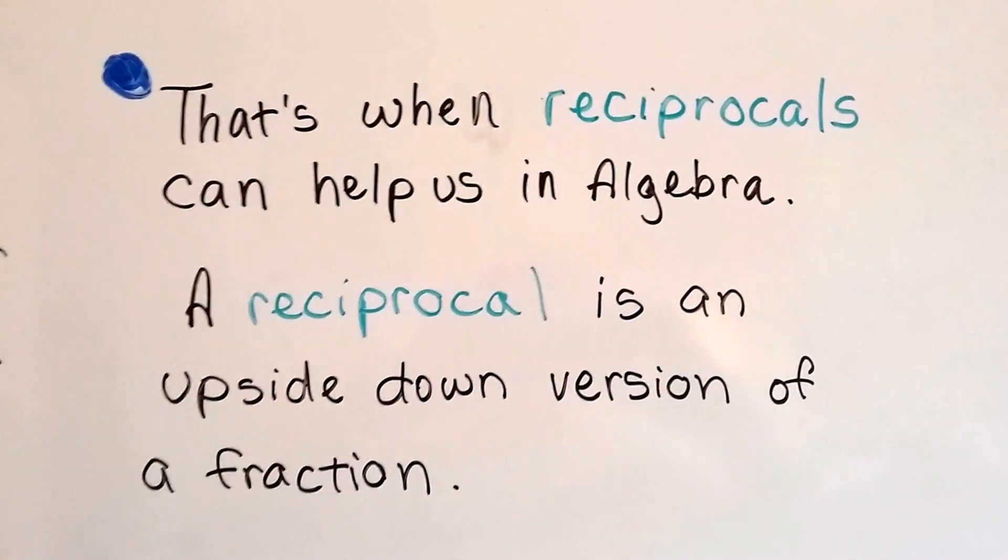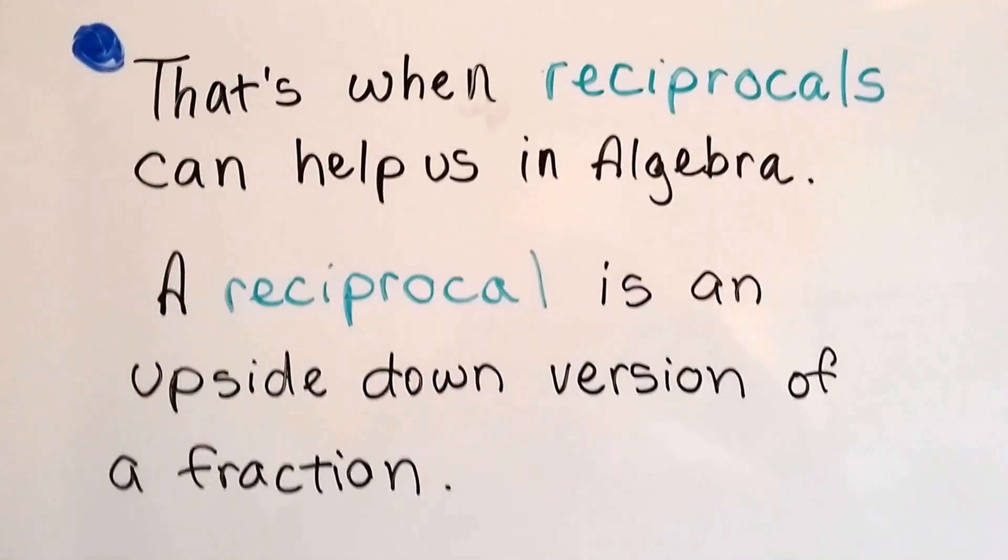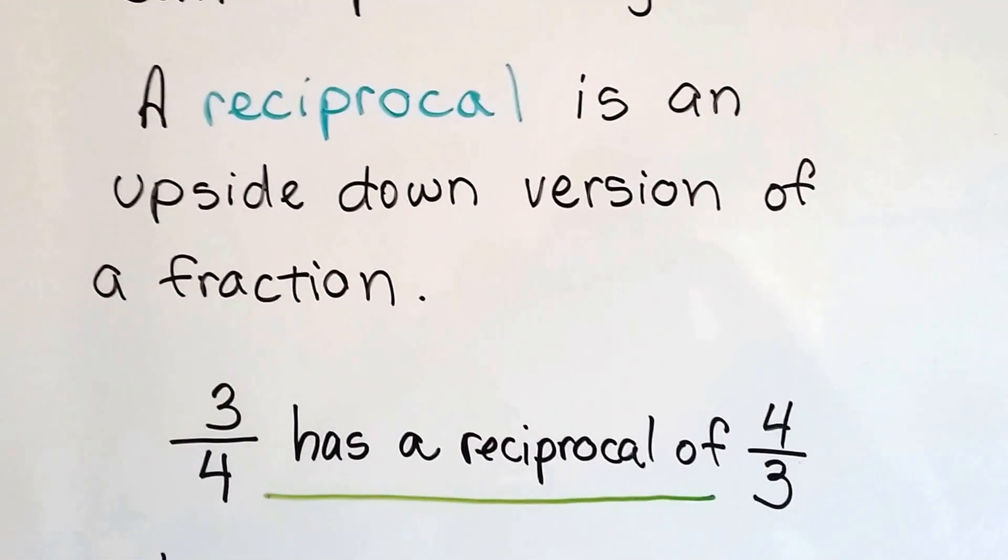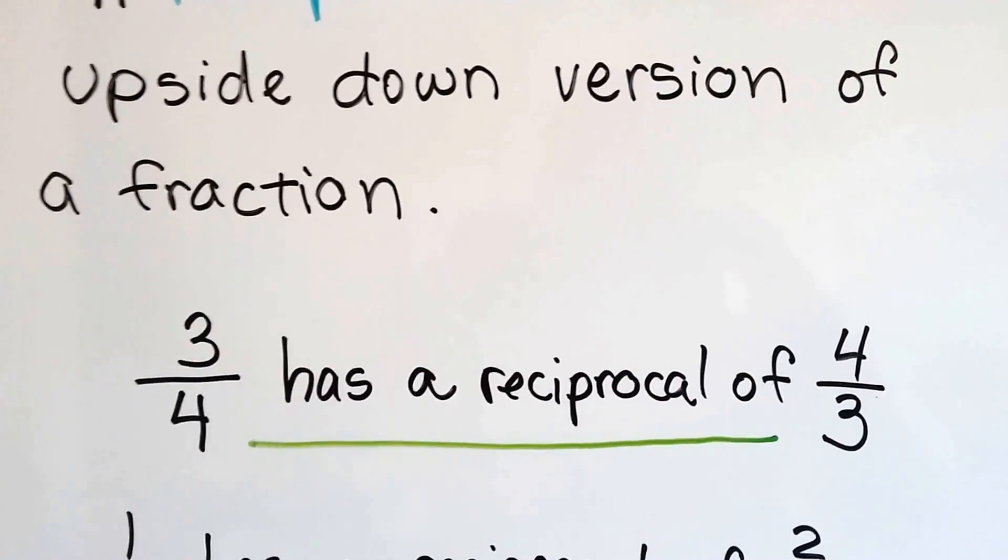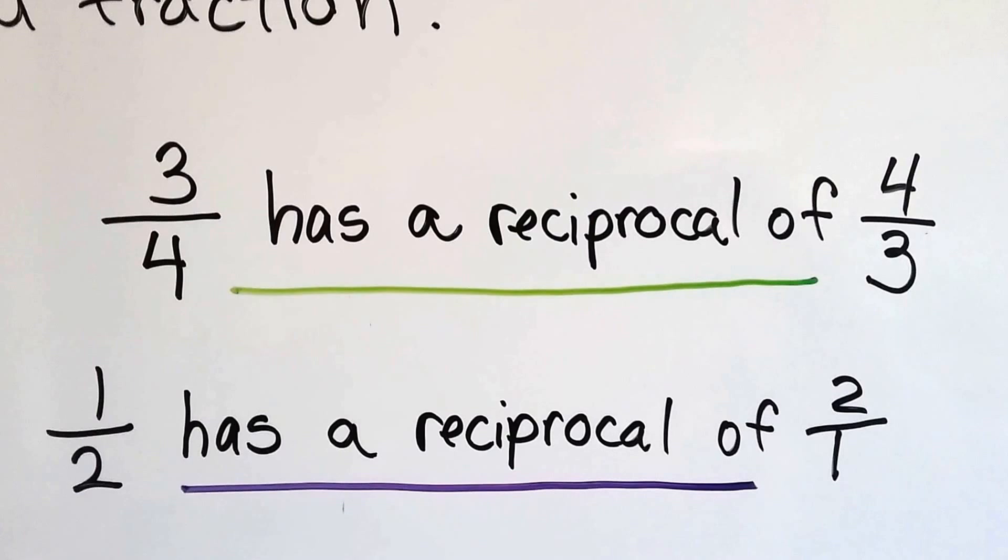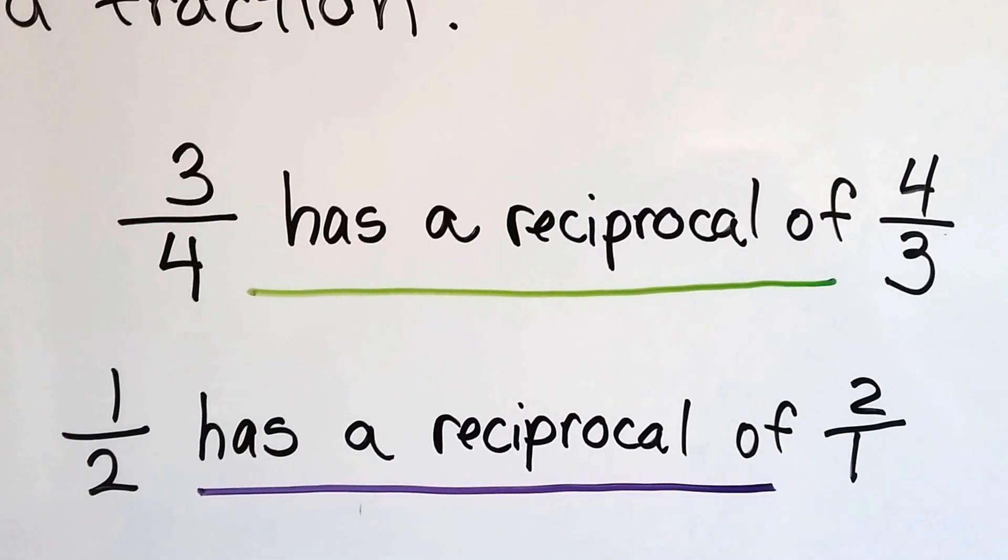Well, that's when a reciprocal can help us in algebra. A reciprocal is an upside-down version of a fraction. Three-fourths has a reciprocal of four-thirds. One-half has a reciprocal of two over one. See how it's just the upside-down version of the fraction?